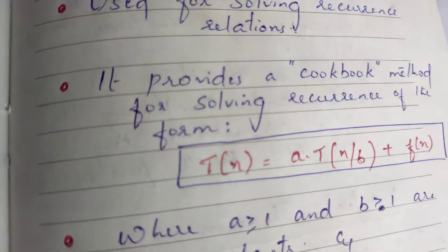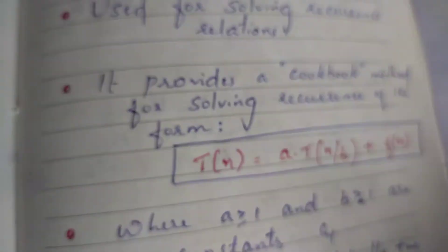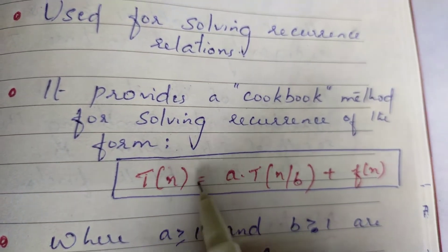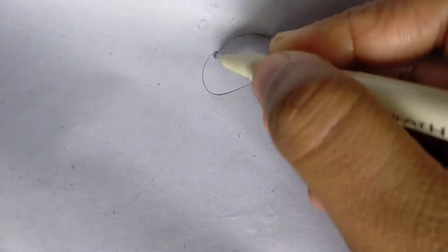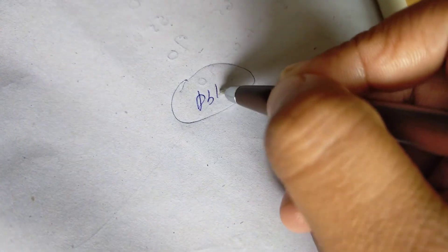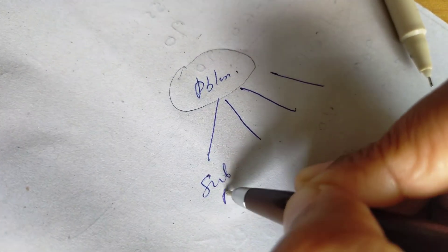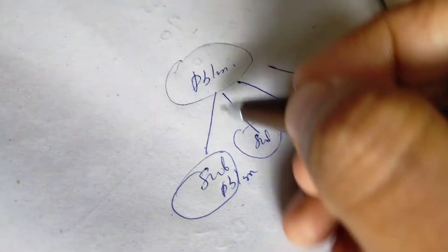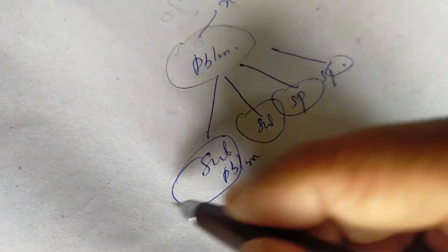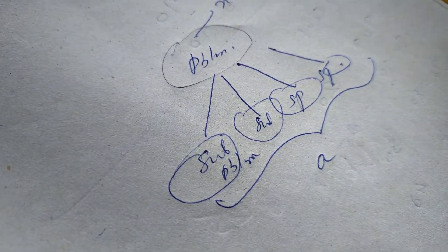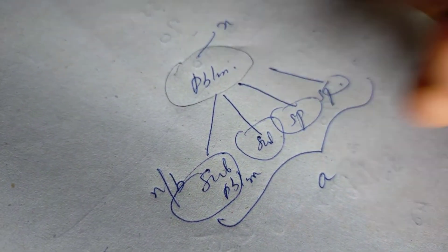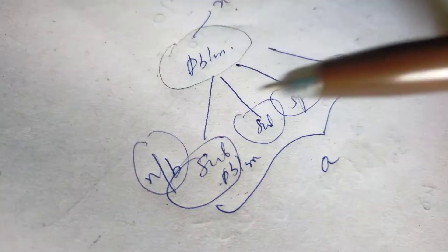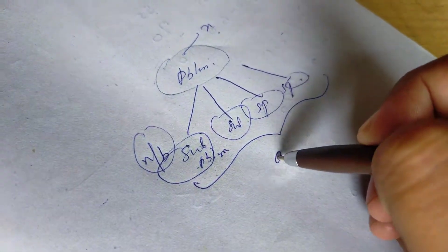Now we have to solve three cases. If you have a problem of size n, we divide it into subproblems. We divide the problem of size n into subproblems, where each subproblem has a size of n/b. Here a and b are constants.